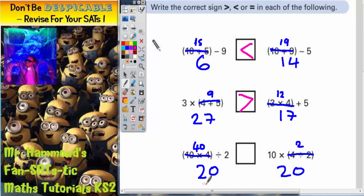And the last one, 20 and 20 are equal. 20 is the same as 20. So we need an equal sign in the last one.